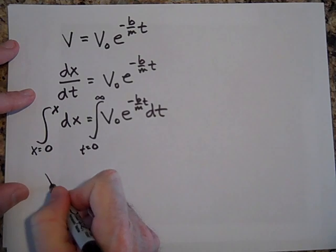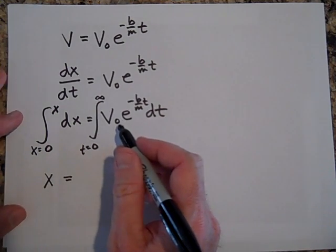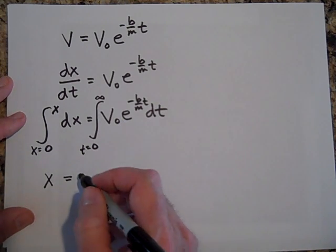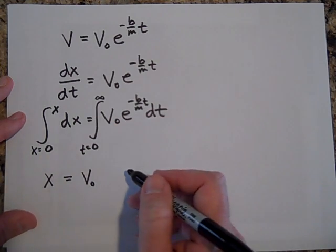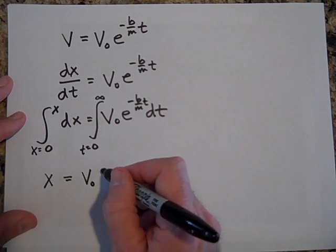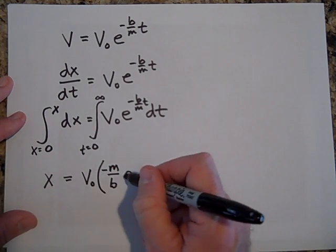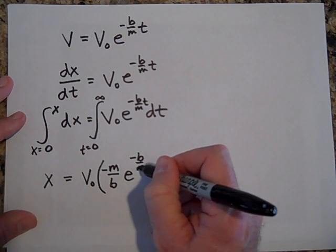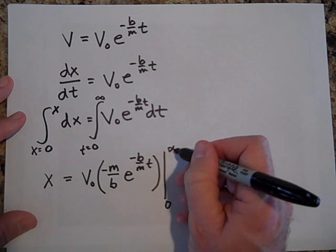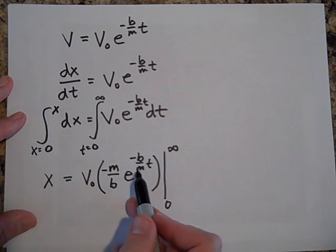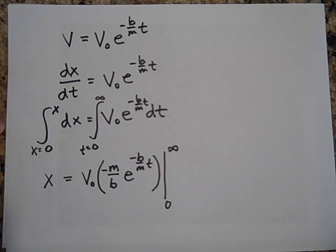So this side just becomes x minus zero, which is just x. And this side, if I take the antiderivative of this, maybe I'll pull the v naught outside since it is a constant. And the antiderivative of this is going to be negative m over b times e^(-b/m times t). And I'm going from zero to infinity. Let's see if that works. So if I take the derivative, sure enough, that's what I get. So that works.